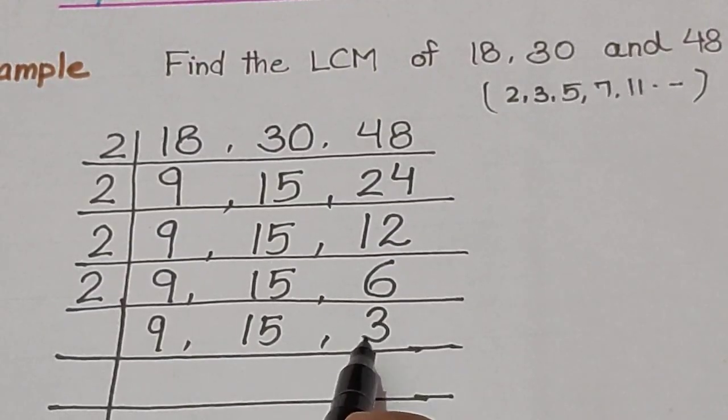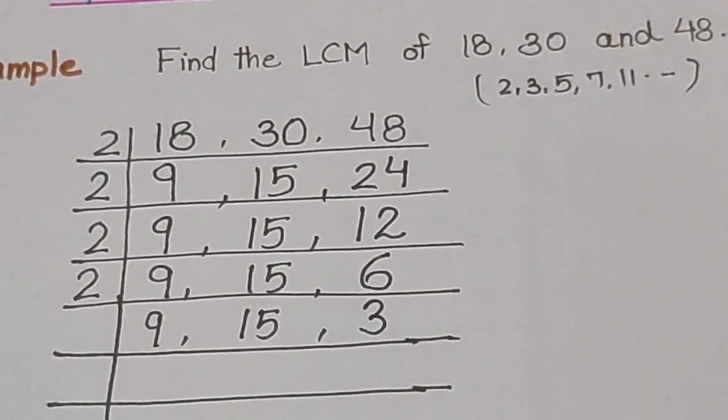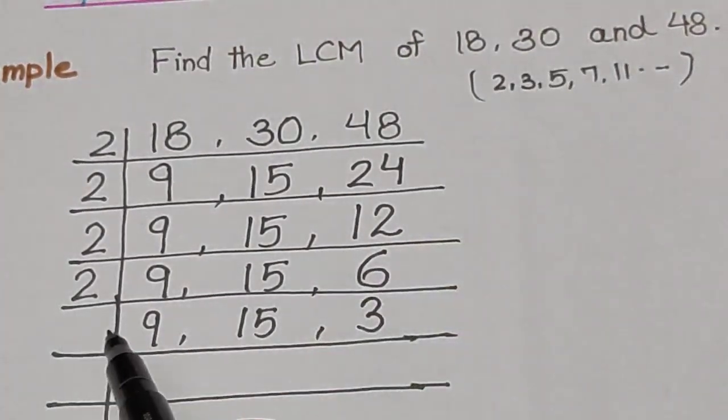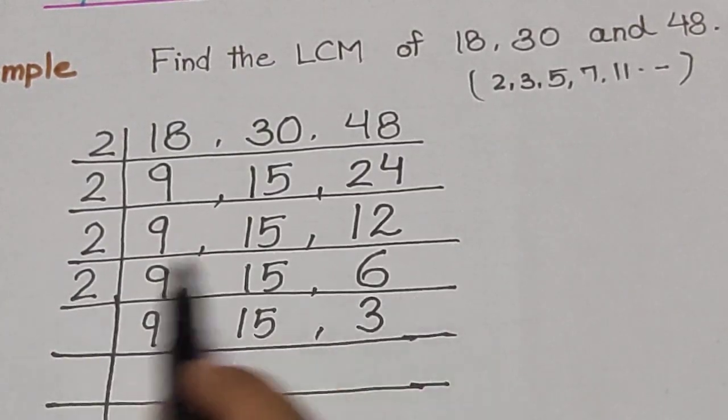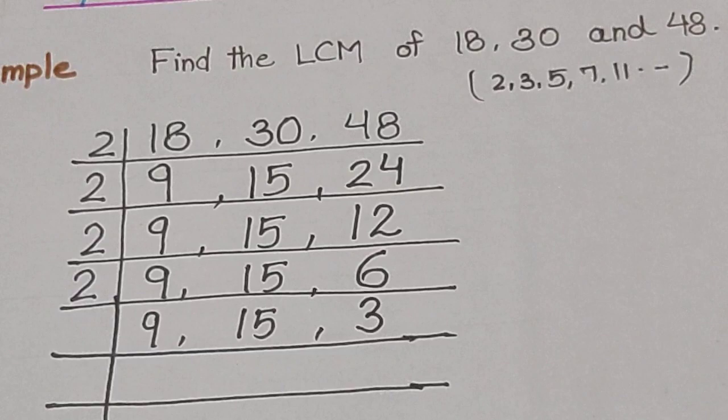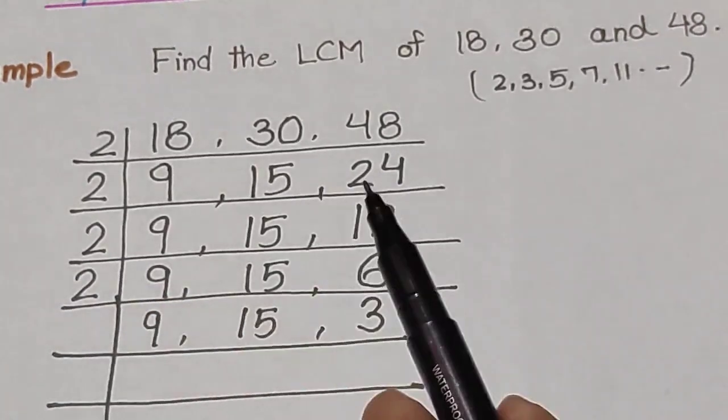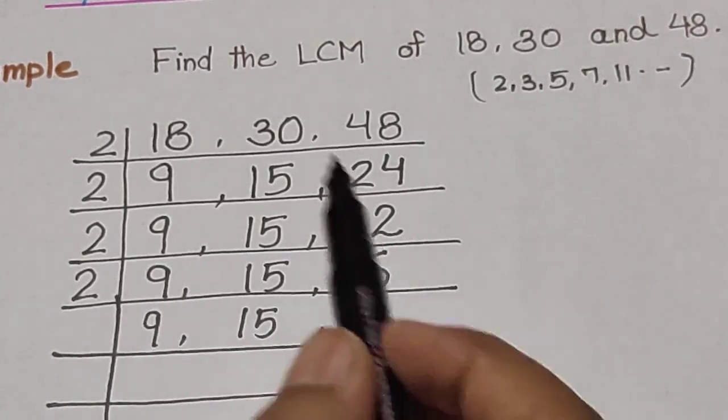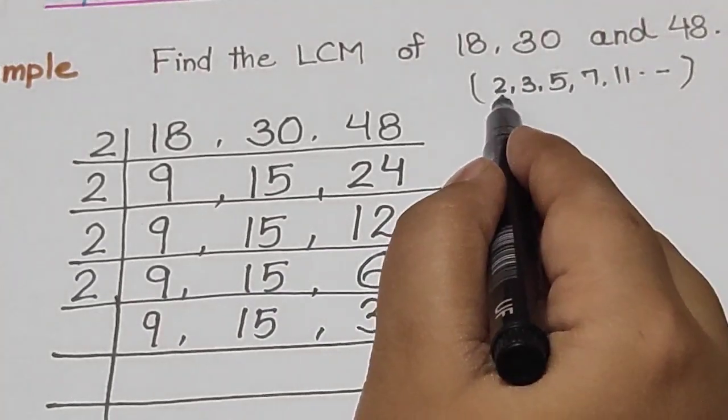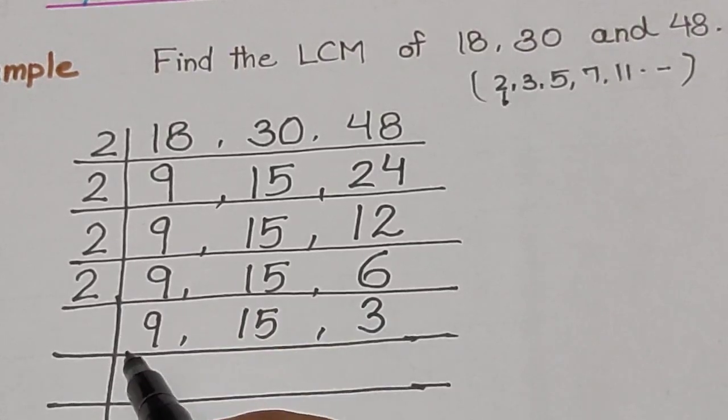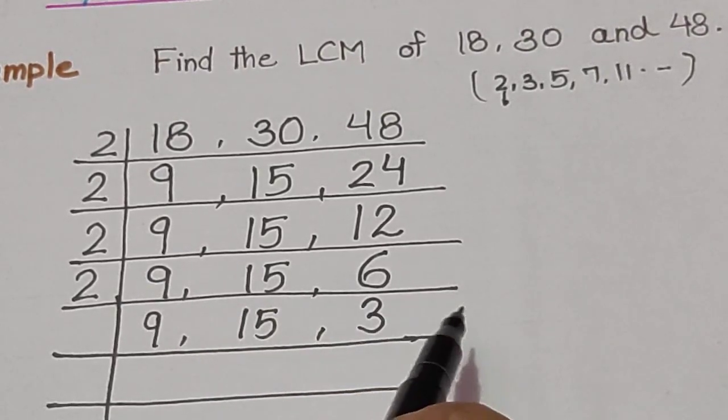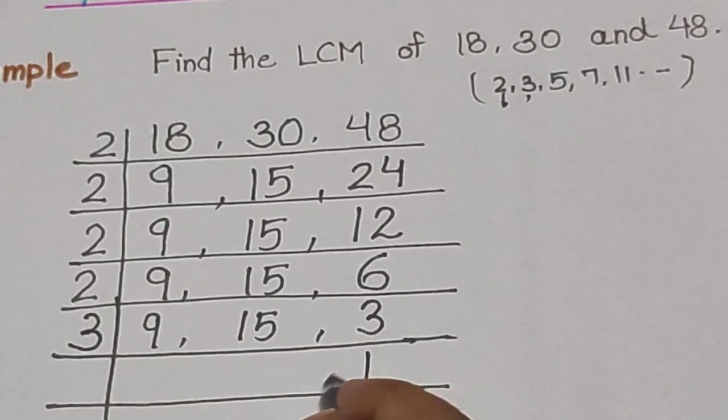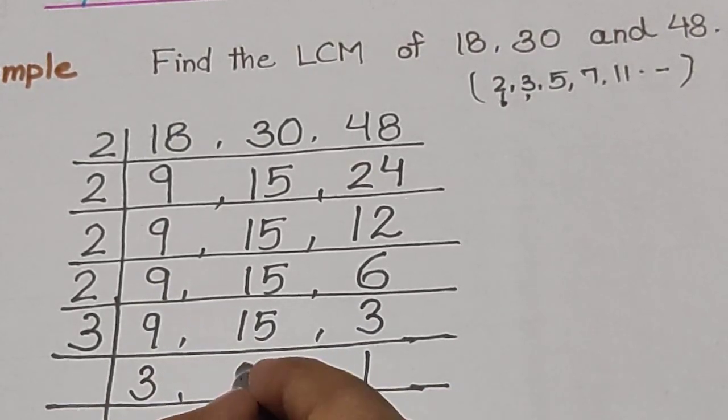Now we move to the next prime number. Before you look at the next number, check first. When you complete dividing by 2, you go to 3. So this is 3, because 3 times 1 is 3, 3 times 3 is 9, and 3 times 5 is 15.